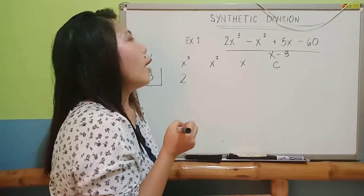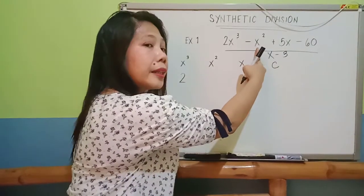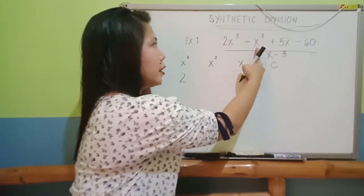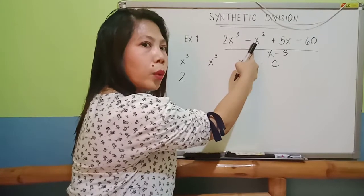Then, what is your coefficient for your x squared? Take a look at your x squared and then you have there a negative 1. There is an imaginary 1 here.